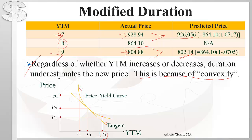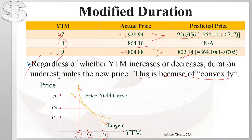Modified duration gives good approximate changes in the bond price for smaller changes in yield to maturity. For example, if the initial yield is R-naught and it decreases to R-minus, the predicted price will be slightly lower than the actual price P-minus. If the yield decreases even further, the gap between predicted and actual price widens. Therefore, modified duration works best when changes in yield to maturity are small.